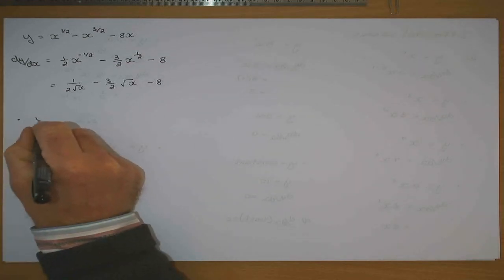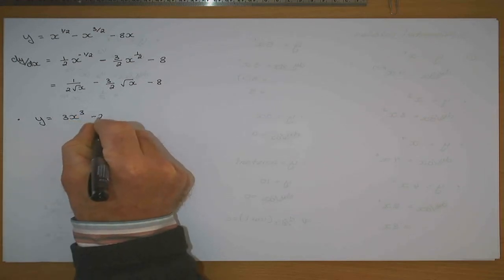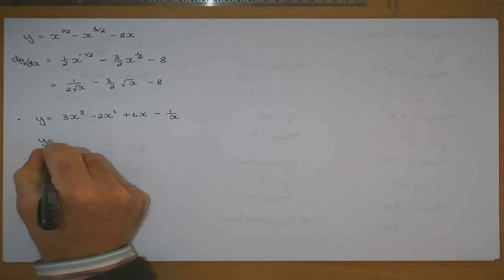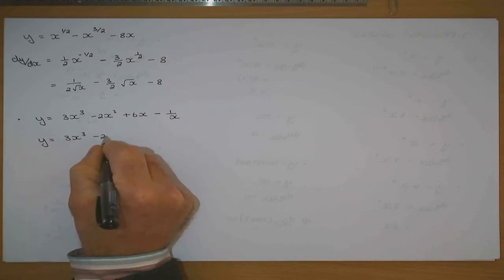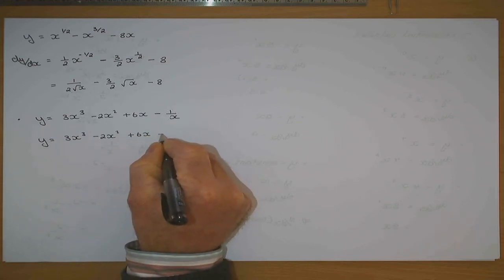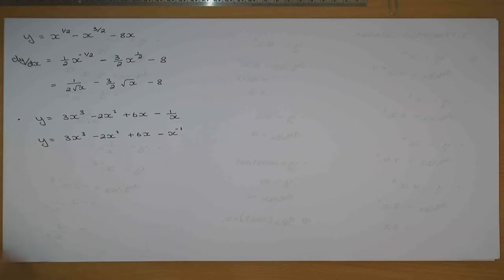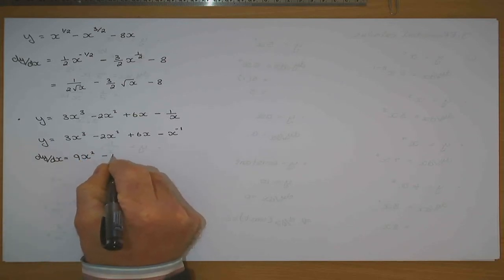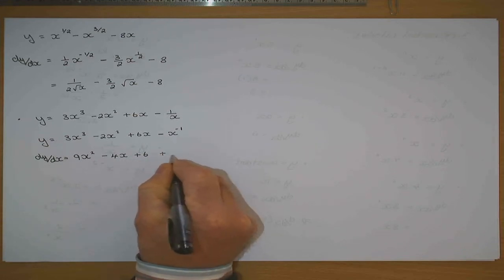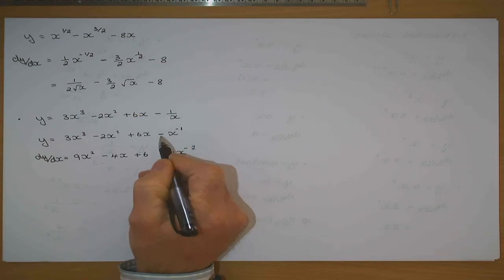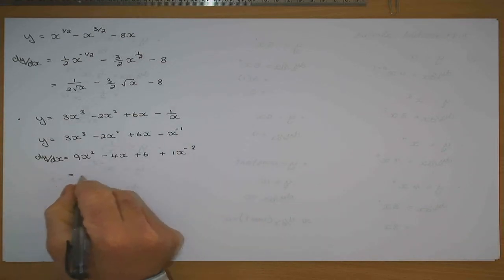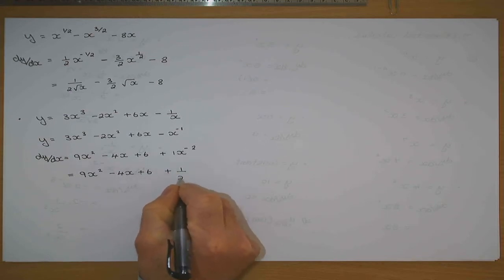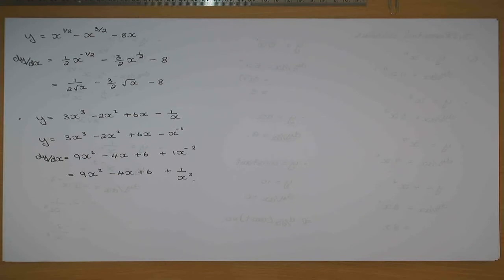If y is equal to 3x cubed minus 2x squared plus 6x minus 1 over x, I'd rewrite this as 3x cubed minus 2x squared plus 6x minus x to the power of minus 1. Then dy/dx would become 9x squared minus 4x plus 6, and differentiating minus x to the minus 1 gives plus x to the minus 2, which is 1 over x squared. So the derivative is 9x squared minus 4x plus 6 plus 1 over x squared.